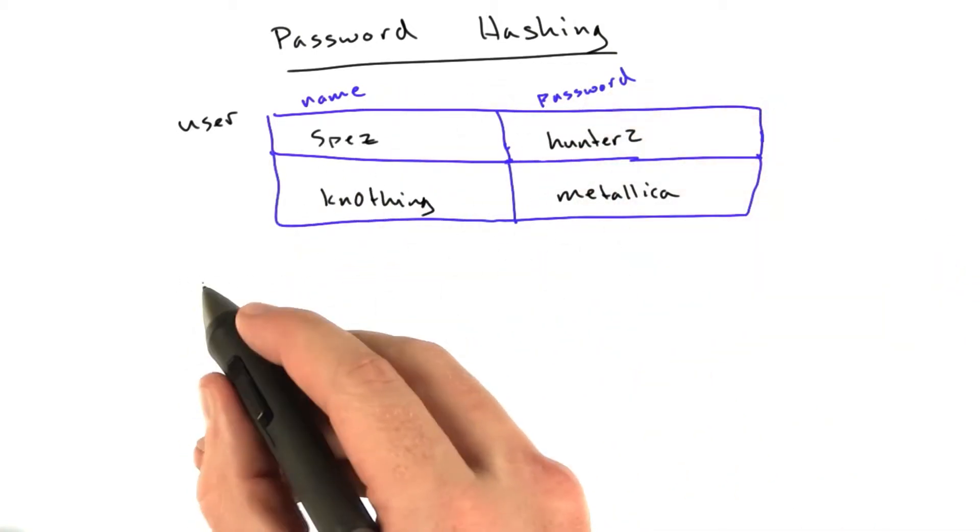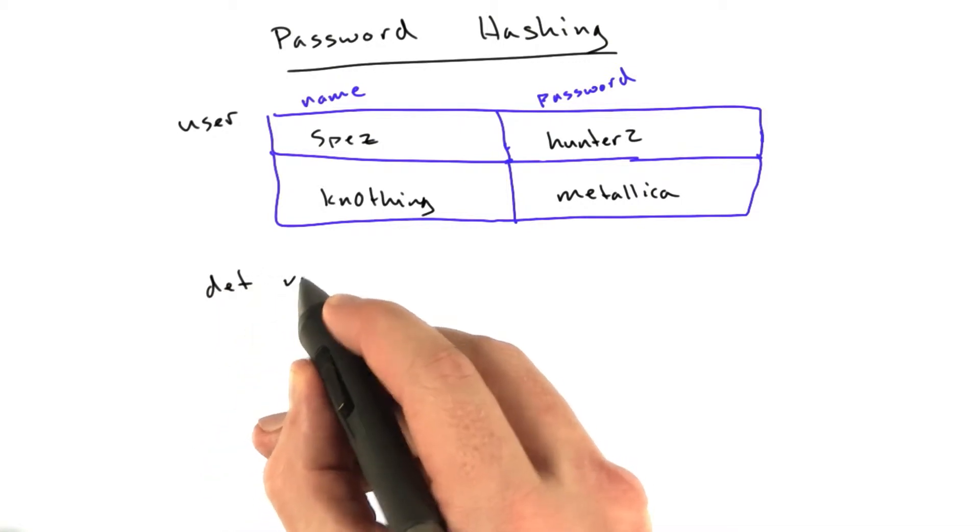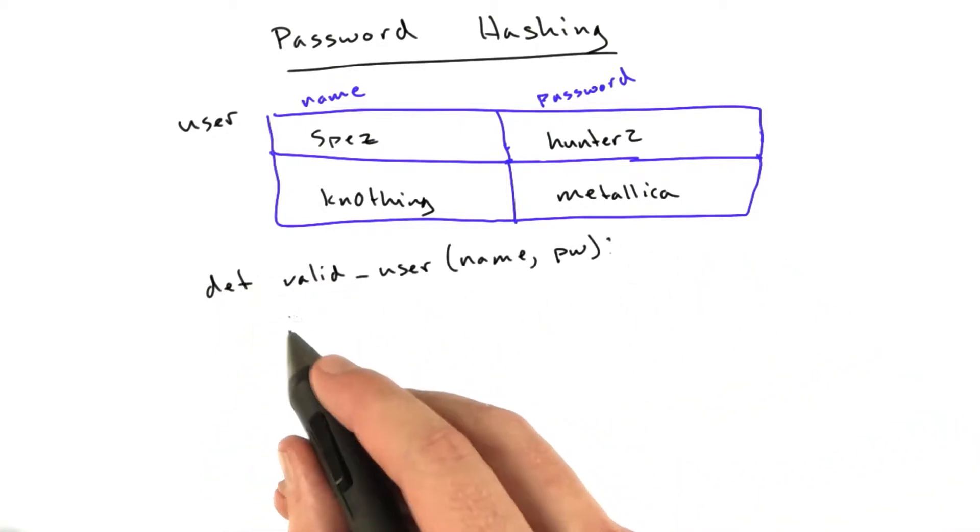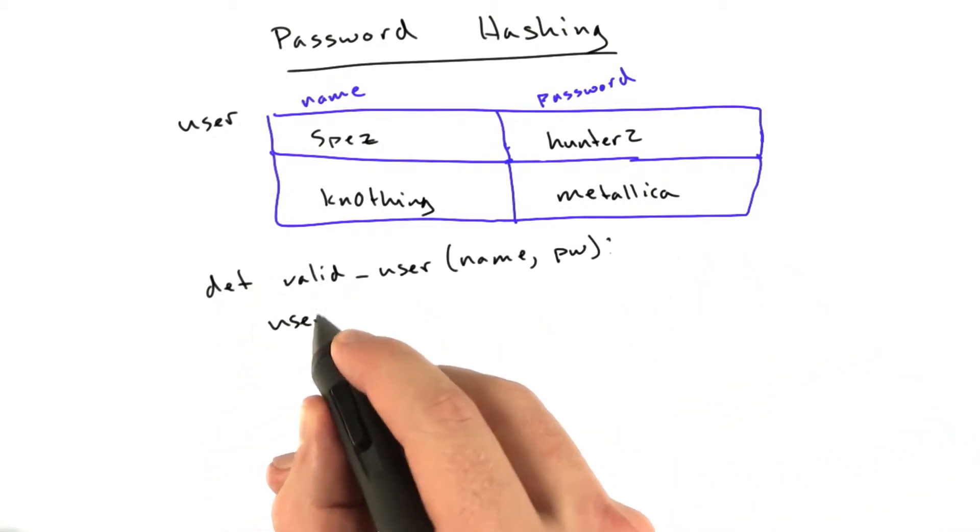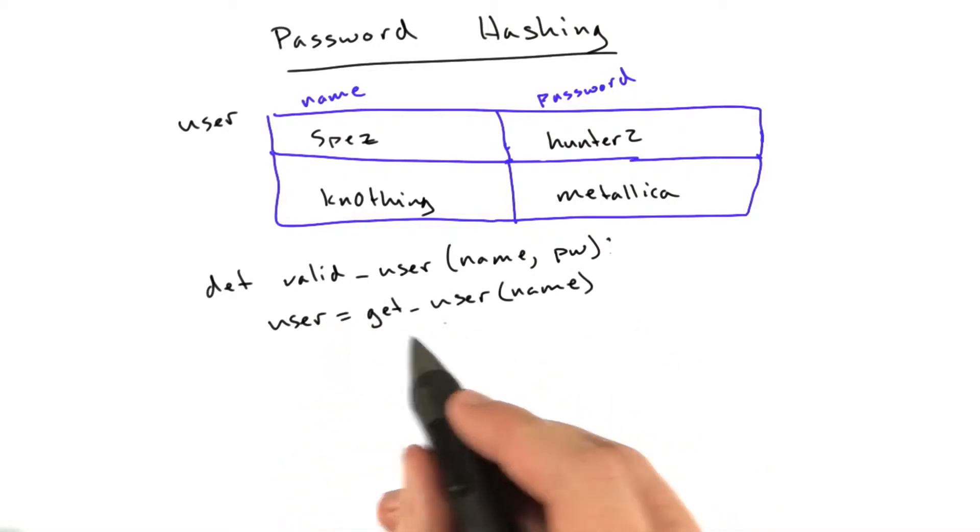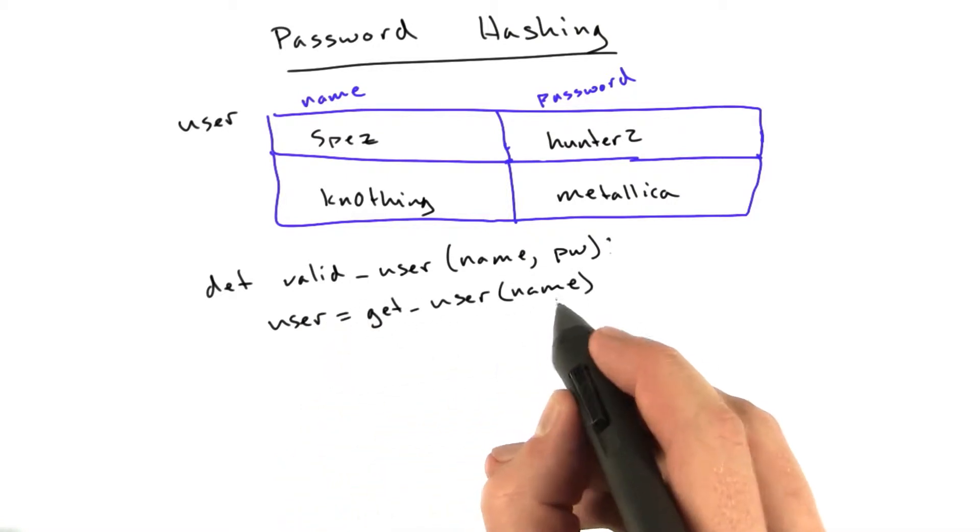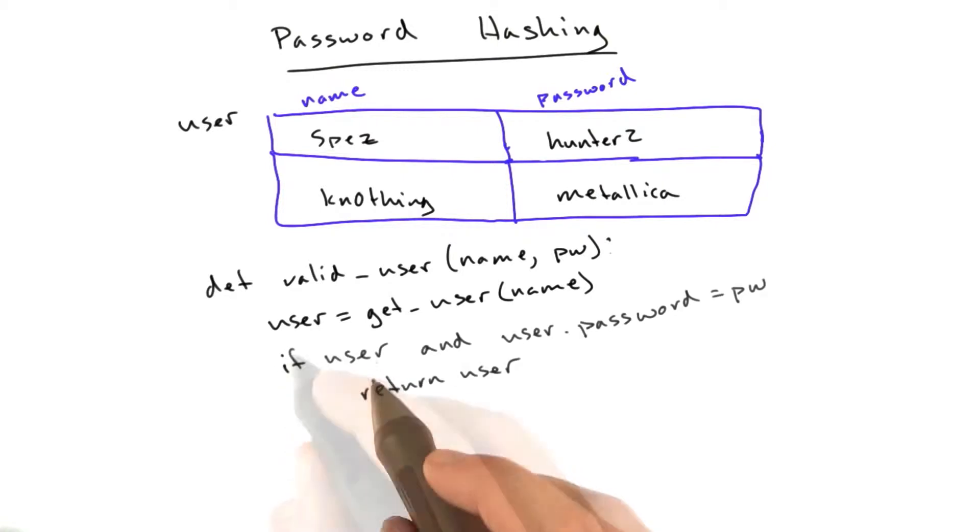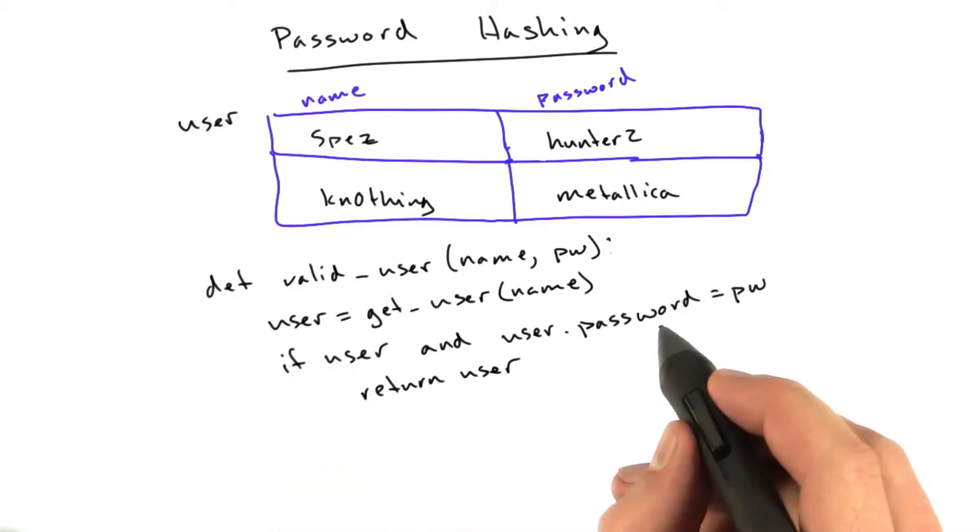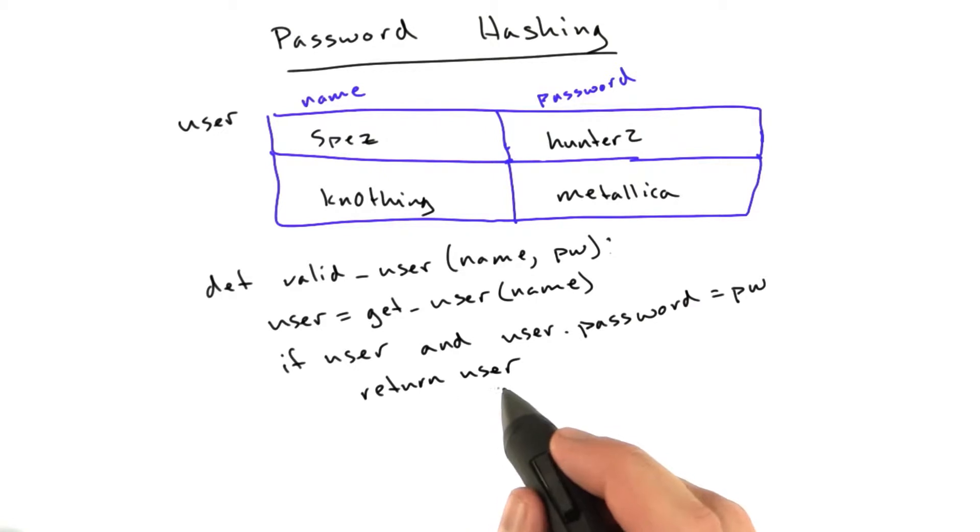If we wanted to verify a user is valid, we might have a function that looks like this. This would be called when somebody logs in, and it would probably say user equals get user, where this is some function that gets the user from the database, and then we'd say if this user exists and this user's password equals pw, what was passed in, return user, and that's simple enough.